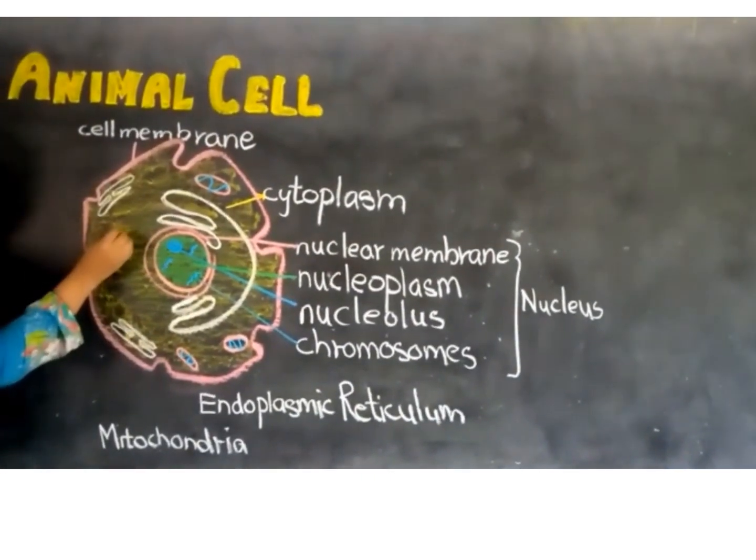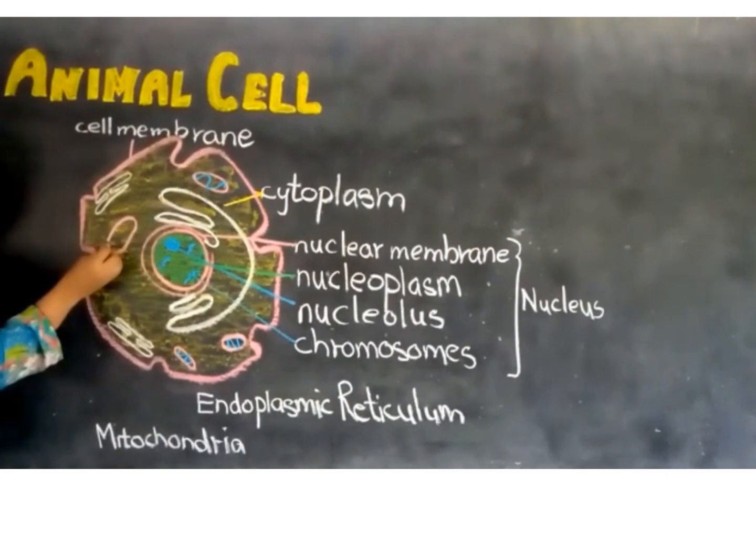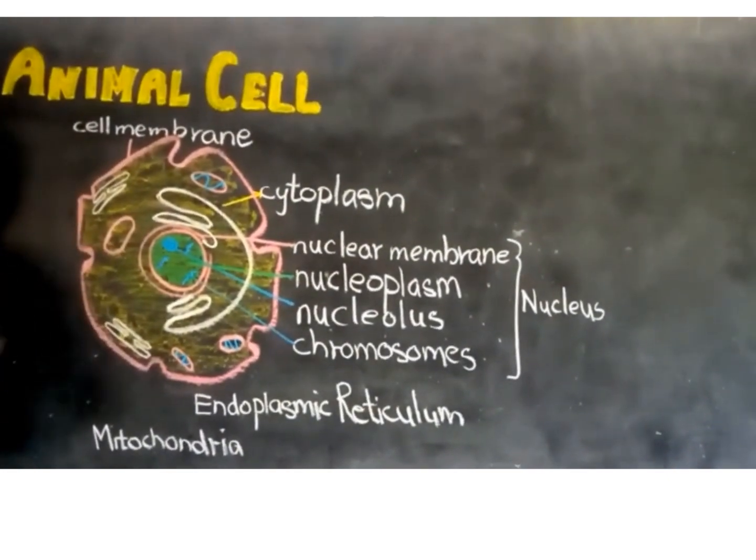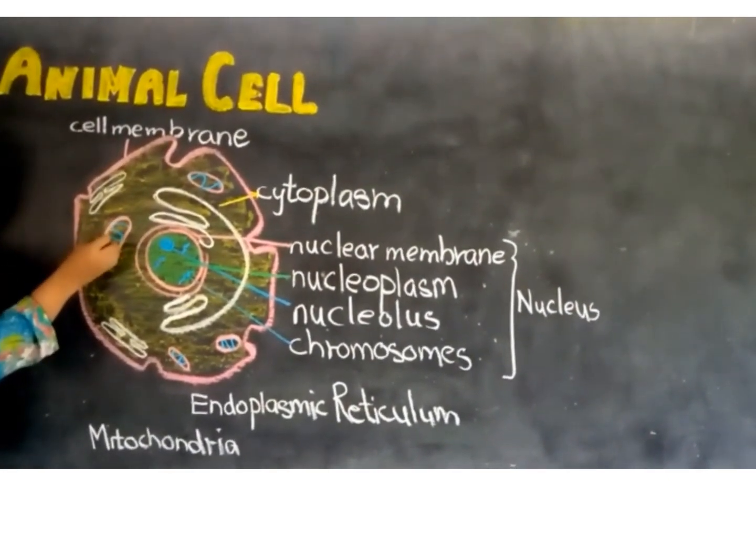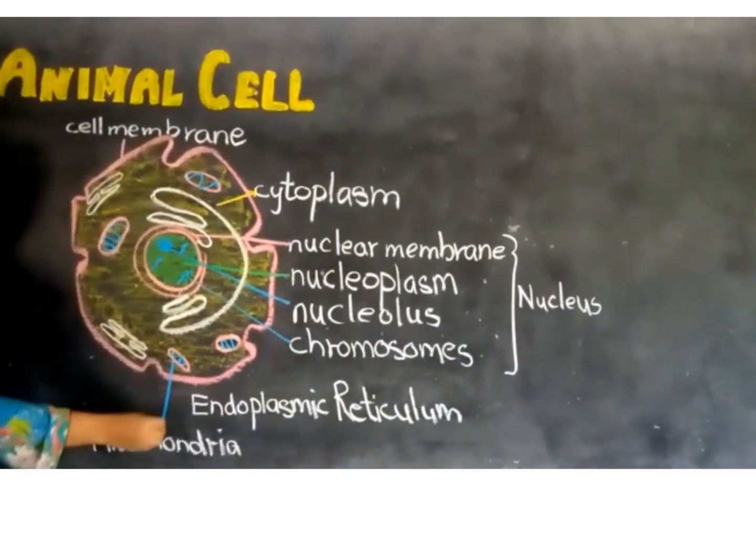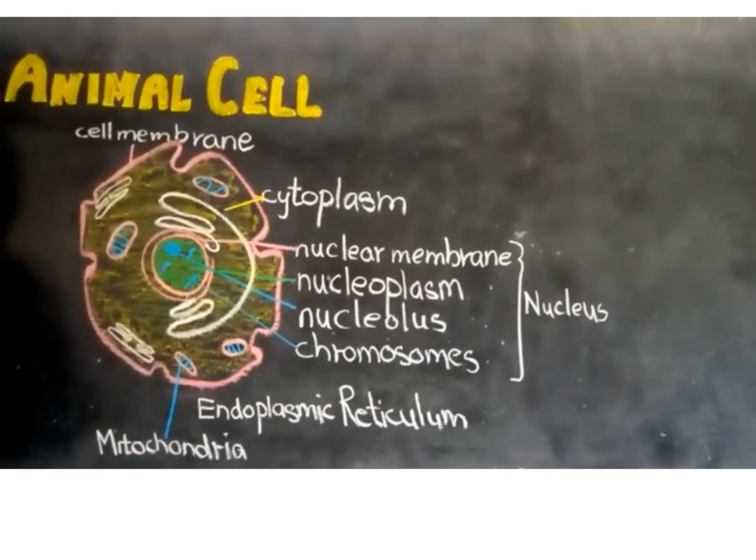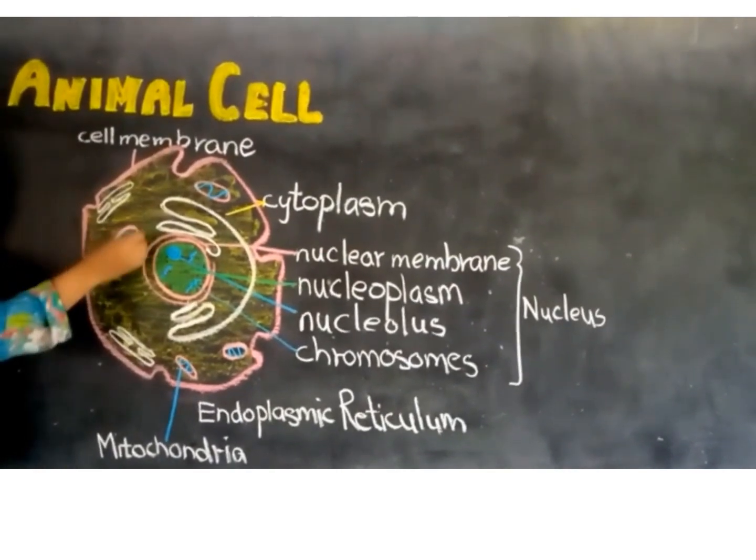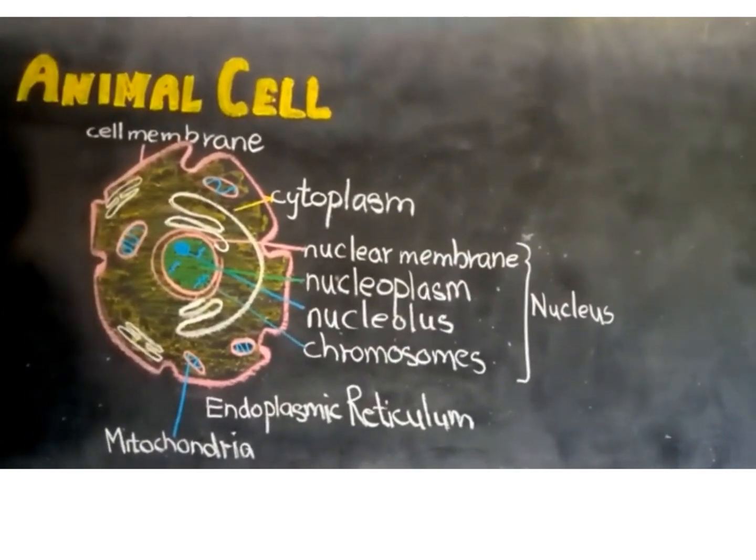The mitochondria is a rod or oval-shaped body present inside the cytoplasm. The mitochondria is also known as the powerhouse of the cell since it is concerned with the release of energy during respiration.